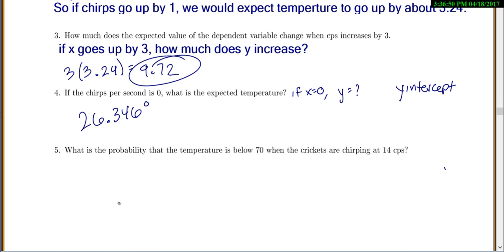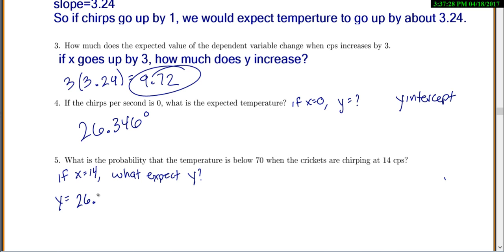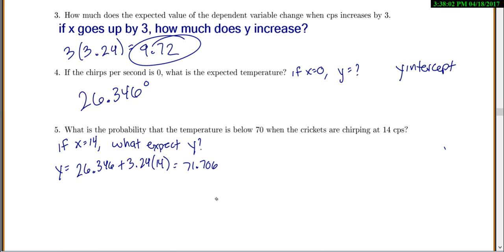This last one probably seems a little bit less intuitive, but it's still something that it's possible for us to do. It says what is the probability that the temperature is below 70 when crickets are chirping at 14 chirps per second? So first of all, there's a few things to think about. So if x equals 14, what should y be? Or what do you expect for y? To do this, let's just plug it into the line. So y equals, once again, it's 26.346 plus 3.24 times our 14. So this is 71.706. So if x is 14, we expect y to be 71.706.